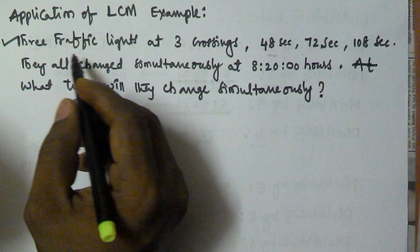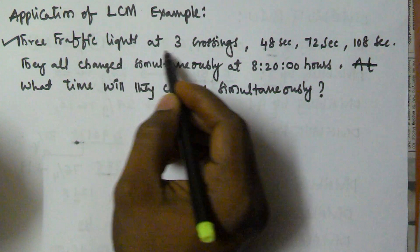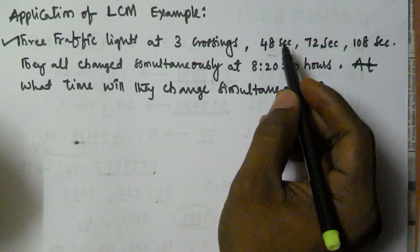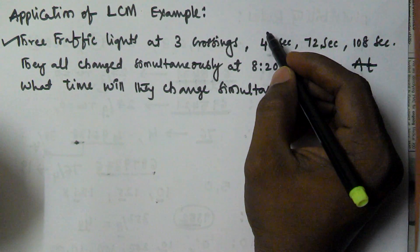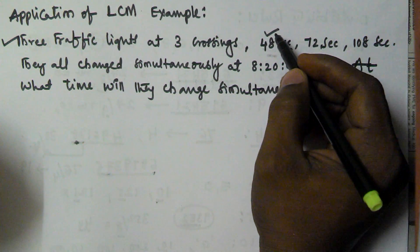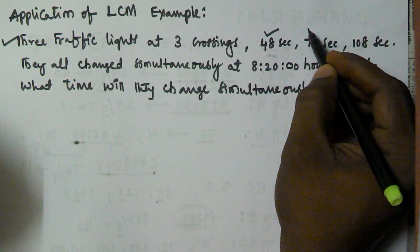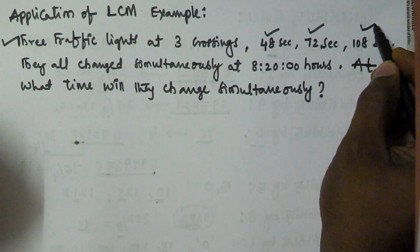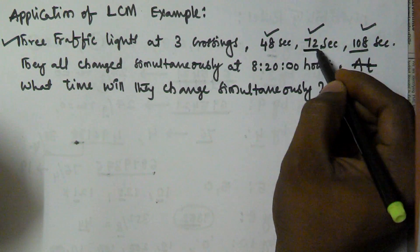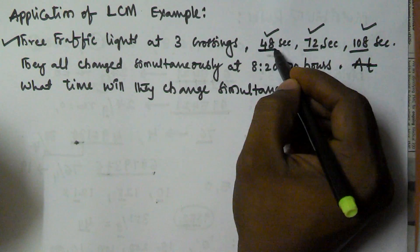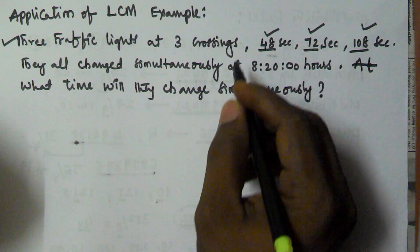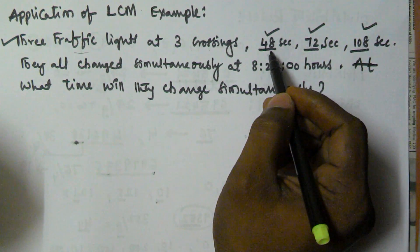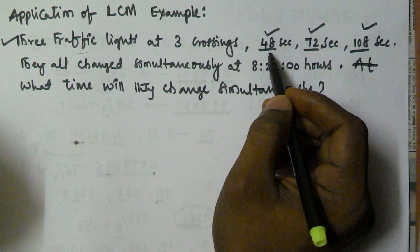So the problem is: 3 traffic lights at 3 crossings are there. The first traffic light will change after 48 seconds, the second one will change after 72 seconds, and the third one will change after 108 seconds.